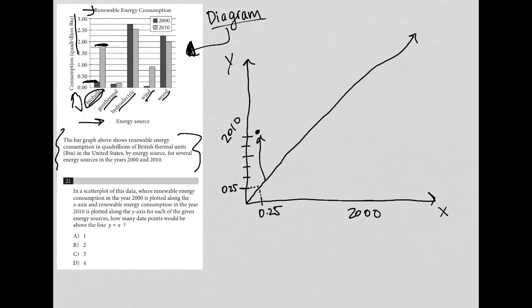For geothermal, it looks like both of these are about 0.2, 0.23 or so. But definitely the 2010 number is above the 2000 number. So I think that gives us a hint.